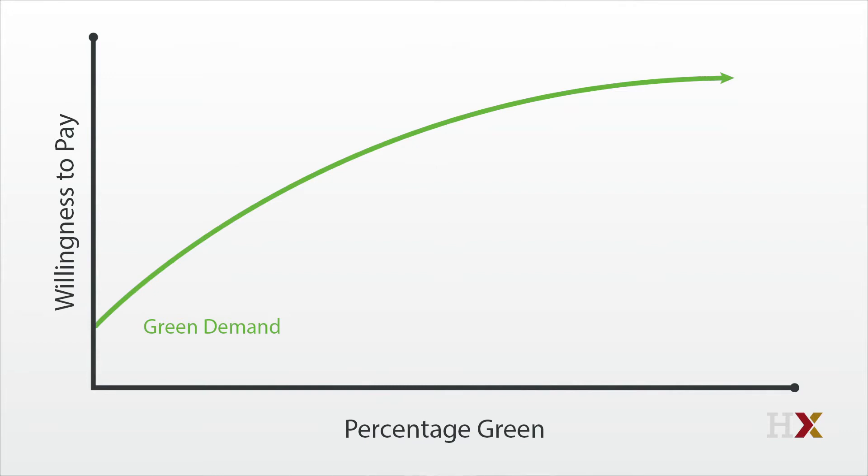First, we'll draw the willingness to pay for the green types, which is increasing with the share of the population that is green. We'll draw this as a line, but it could curve. Then we'll show a symmetric willingness to pay for the blue types, which looks exactly the same, except that it is decreasing with the share of the population that is green. The lines are symmetric, so they meet at 50%.